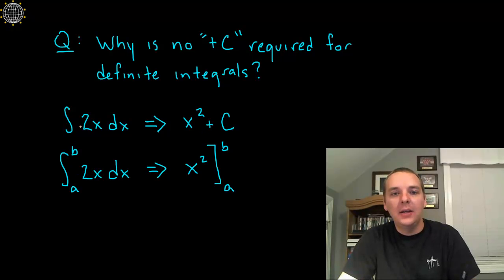But if we were doing a definite integral where we put limits of integration from A to B, then the integral would be just X squared. We put a bracket with an A and a B. So where does this plus C go, why don't we put it for definite integrals?